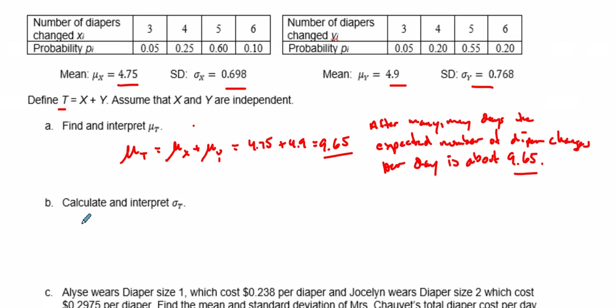Now the next thing we're going to calculate is the standard deviation. The standard deviation of T is going to equal the standard deviation of X plus the standard deviation of Y. Psych, no. If you did that, that would be wrong because we want to find the variances of each one. So we're going to take 0.698 and square that, and add that to 0.768 right here and square this. When you put this in your calculator, that's going to roughly be about 1.038.